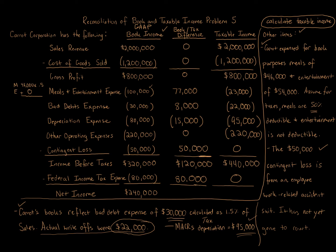For the net income line, the book-to-tax difference in the middle column is positive $200,000 — that's $120,000 plus the $80,000 federal tax add-back. This brings taxable income up to $440,000. That is our completed chart — we've gone through all the adjustments and arrived at taxable income of $440,000.